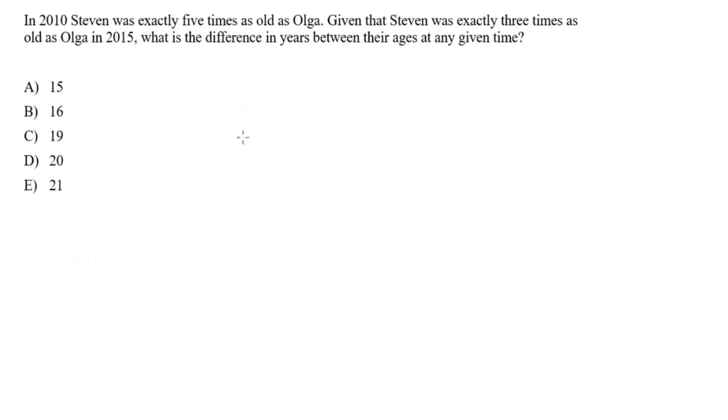Okay, remember, this is IMAT problem solving. We don't want to write too much, and we want to write as quickly as possible. So the way I would approach this is by writing the younger person first, and we'll just designate her as O for Olga. And we don't know her age, so we'll just put X. And then we have Stephen. We'll designate him as S. And his age is 5X. That is, it's five times as much as Olga's.